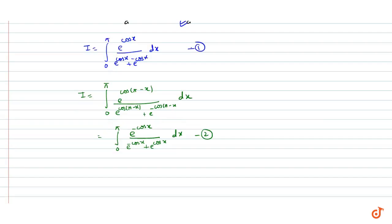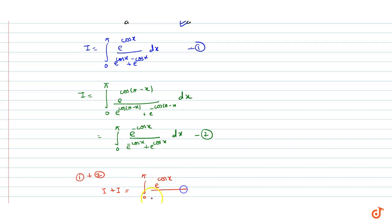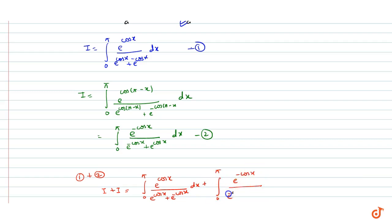Ye ho gaya equation number 2. Agar 1 aur 2 dono ko add kartay hain, tho hamii milega I plus I is equal to integration from 0 to pi, e to the power cos x upon e to the power cos x plus e to the power minus cos x, dx. Plus integration from 0 to pi, e to the power minus cos x upon e to the power minus cos x plus e to the power cos x, dx.